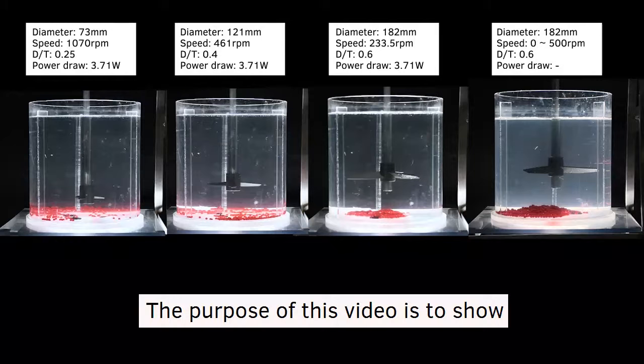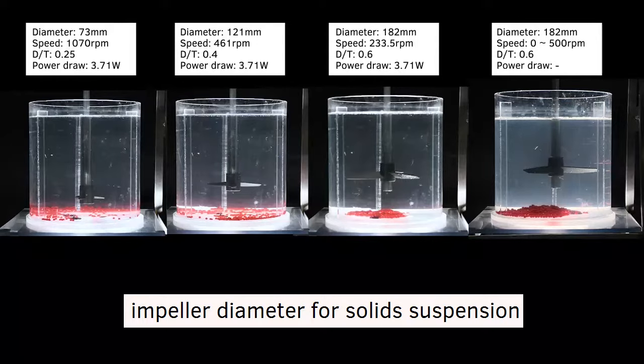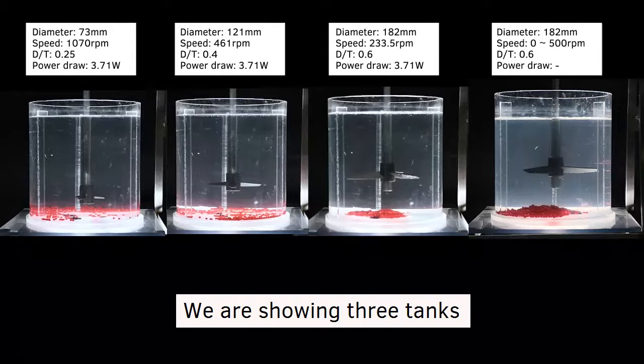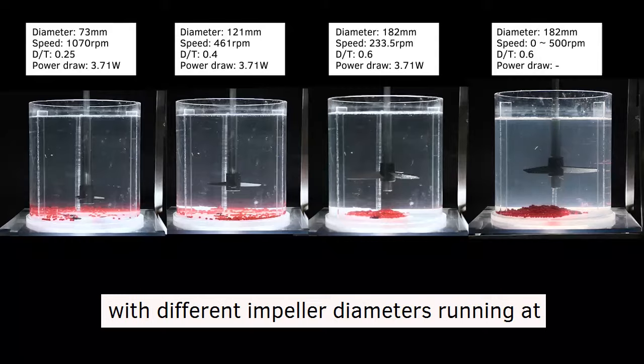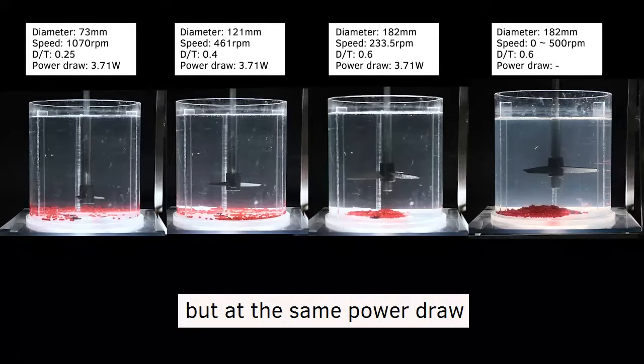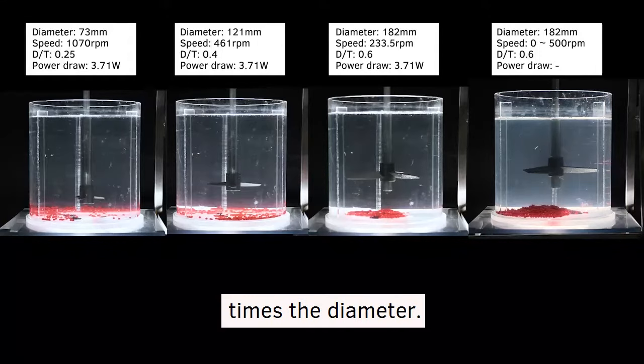The purpose of this video is to show the importance of selecting the correct impeller diameter for solid suspension. We are showing three tanks with different impeller diameters running at different speeds, but at the same power draw, as power is a function of impeller speed times the diameter.